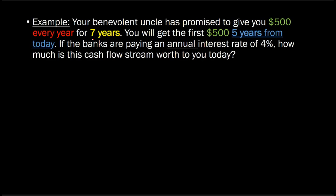In this video, I'm going to talk to you about what are known as delayed annuities. What does that mean? Let me show you an example. Let's suppose that your rich and benevolent uncle has promised to give you $500 every year for seven years. This is like an annuity because you're getting a constant cash flow of $500, at regular intervals, for a certain number of years — seven years. Except that your uncle says he's going to give you the first $500 five years from today.